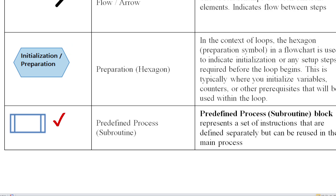Then another symbol is the Pre-defined Process symbol. You can use it for a subroutine or function call. It is used to represent a set of instructions that are defined separately.